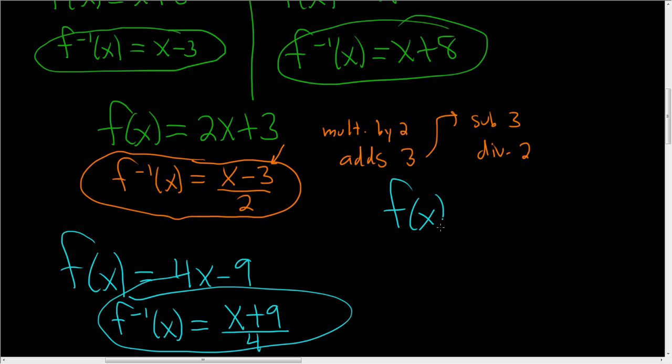One more. f of x equals the cube root of x plus 2. In this case, f takes x, adds 2, and then takes the cube root. So to undo the cube root, we first have to cube x. And then instead of adding 2, we subtract 2. And there it is.